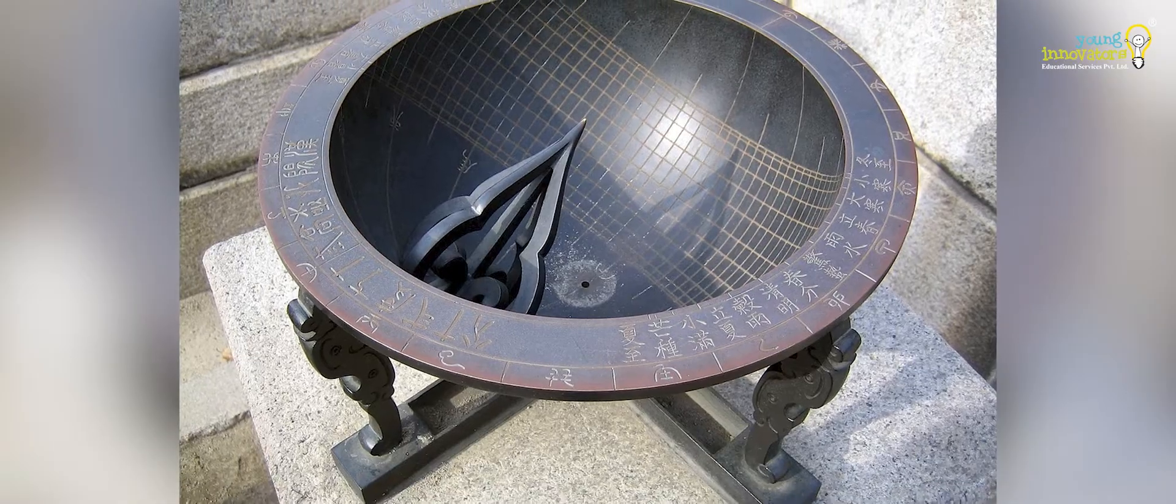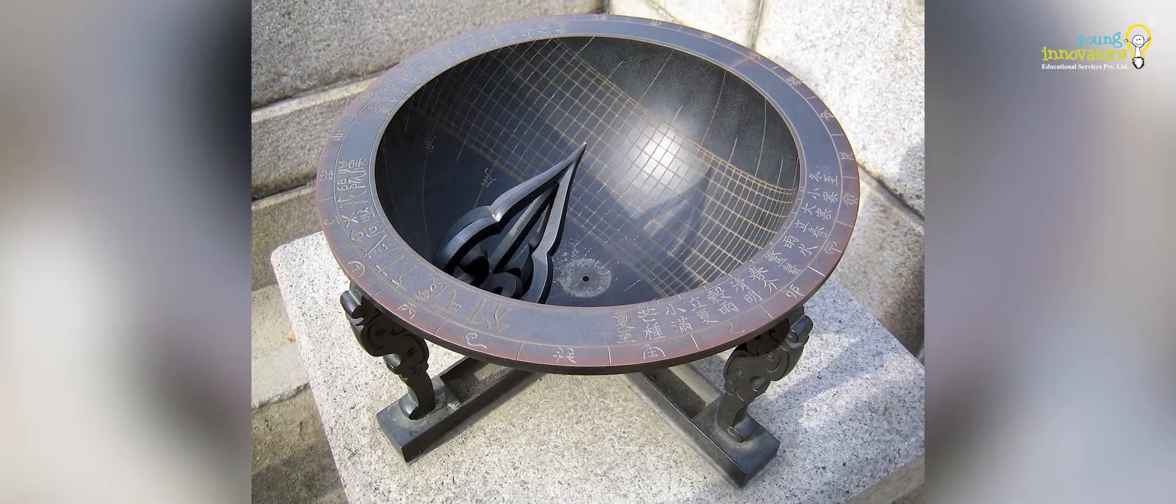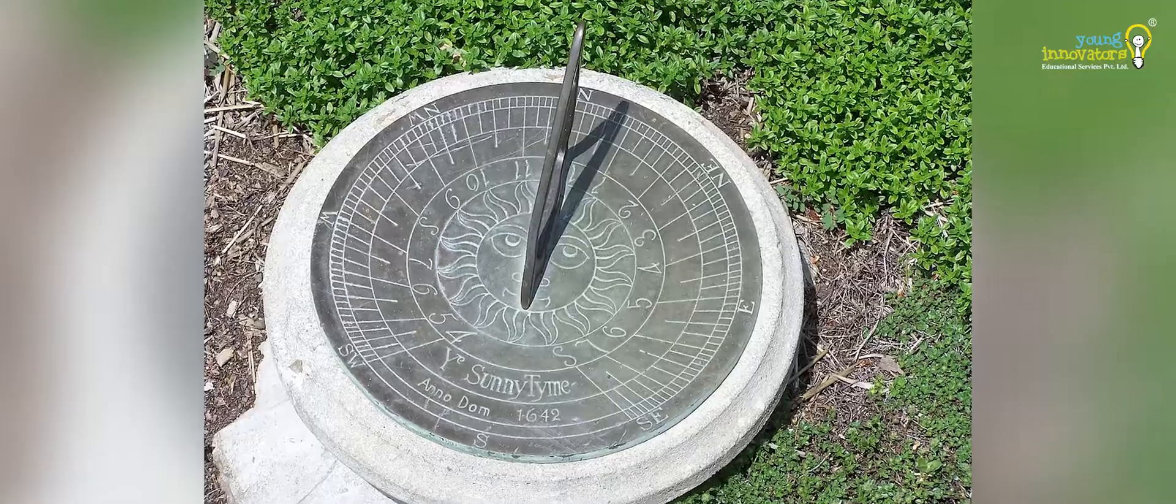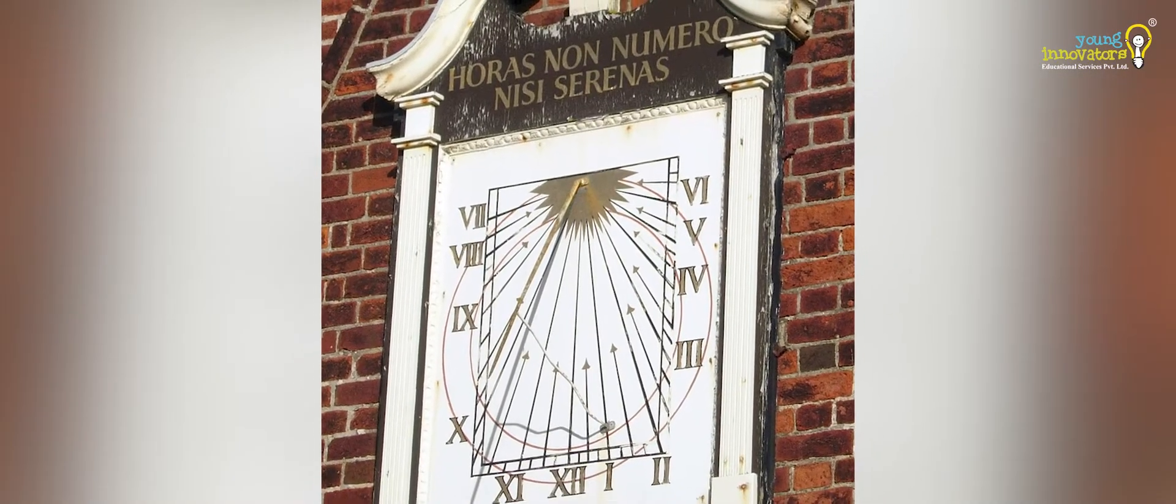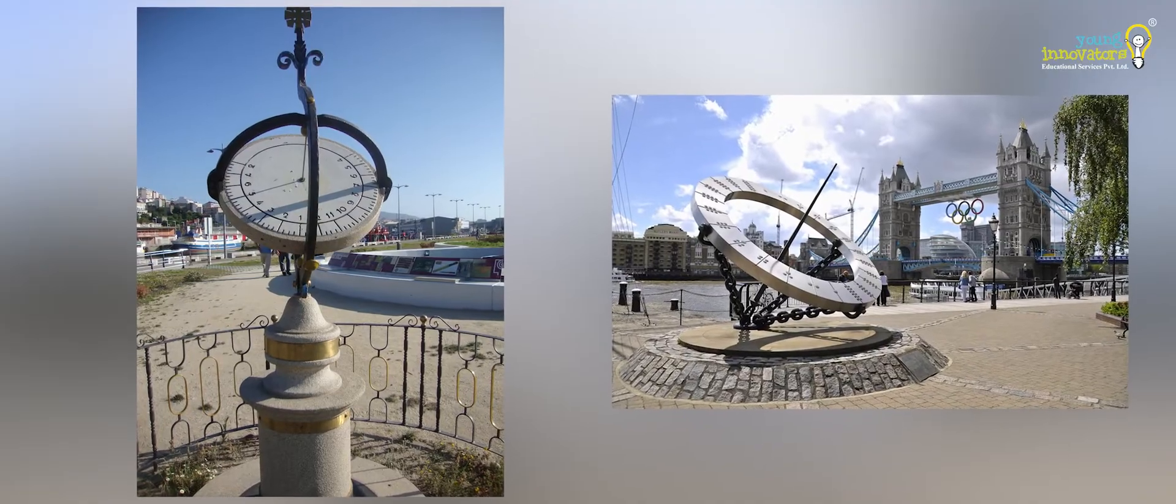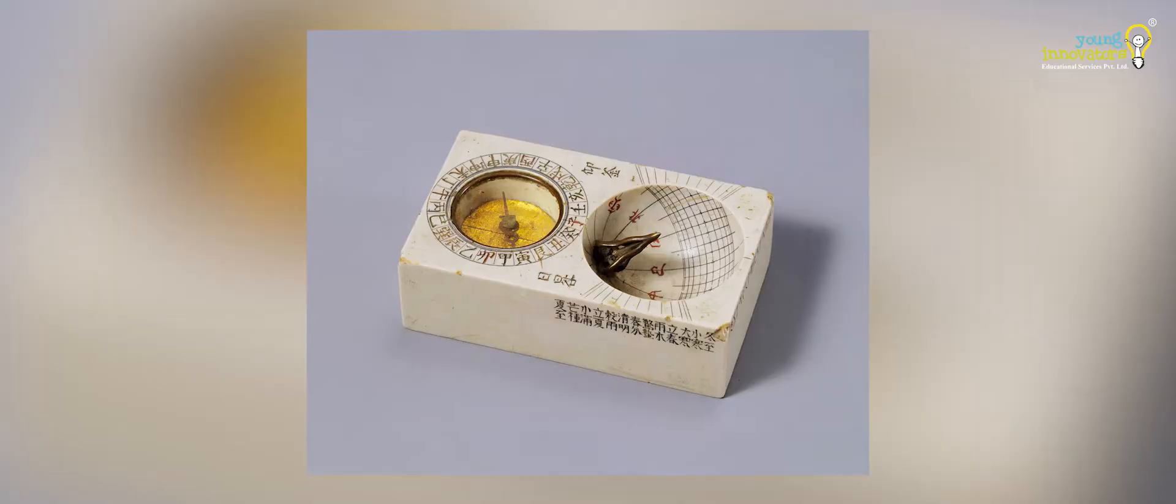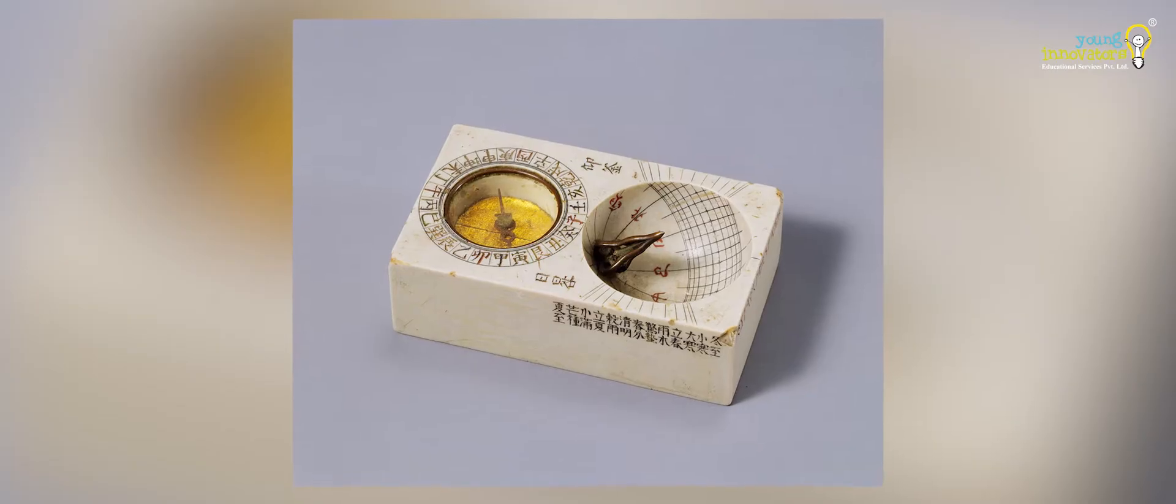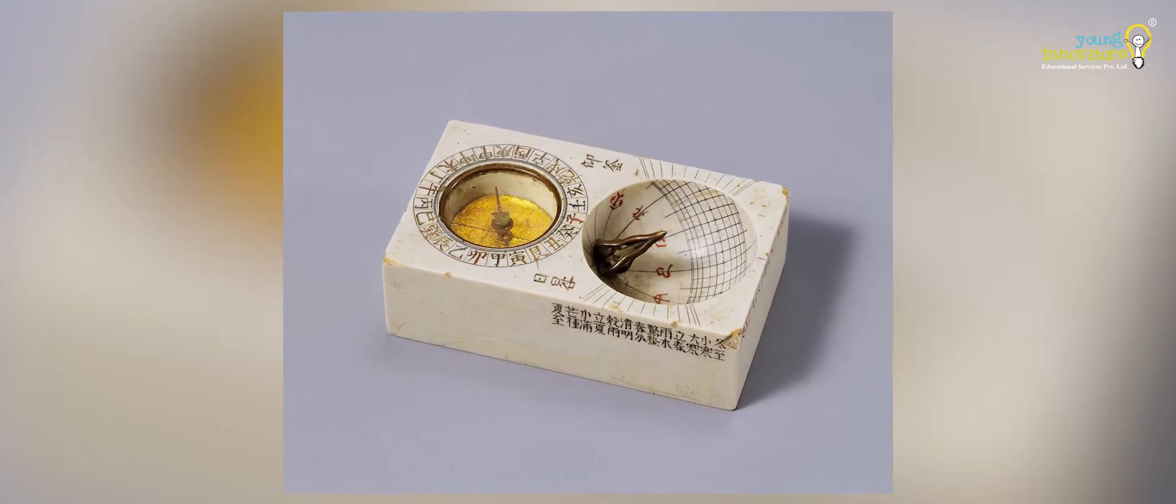Over time, different types of sundials emerged. The horizontal sundial is the most common, while the vertical sundial is designed for walls. The equatorial sundial aligns with the earth's equator, and the portable sundial allowed Romans to carry timekeeping with them wherever they went.